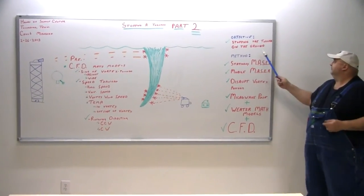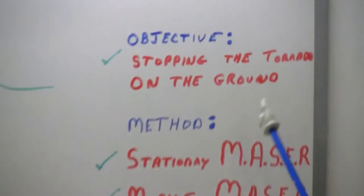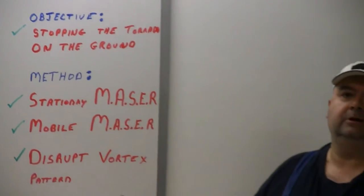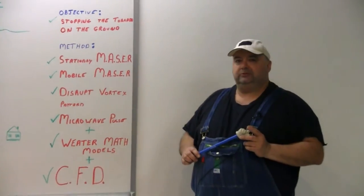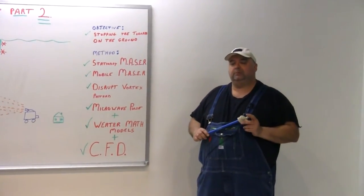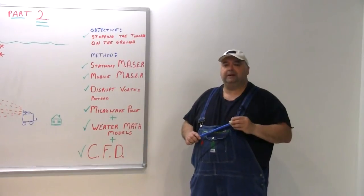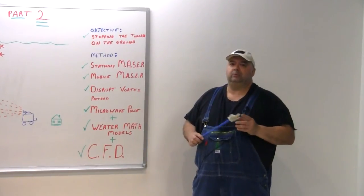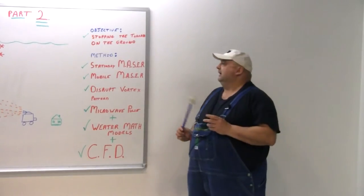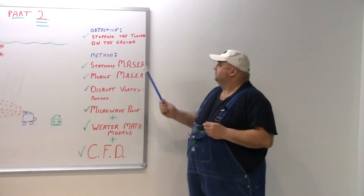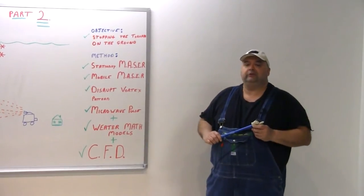The objective is stopping the tornado while it's on the ground. Now if you remember in Stopping a Tornado part one, it was using computational fluid dynamics and two airborne masers to disrupt the pattern before the tornado actually touched down. And this is the second part here of a three-part series.